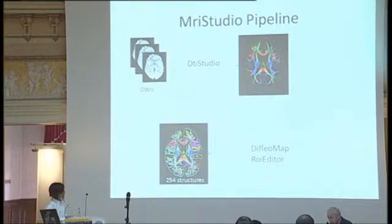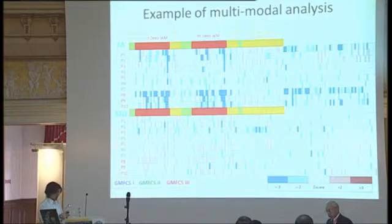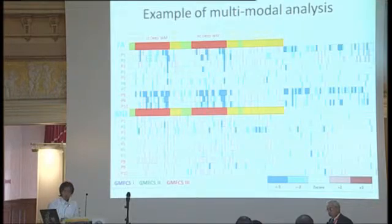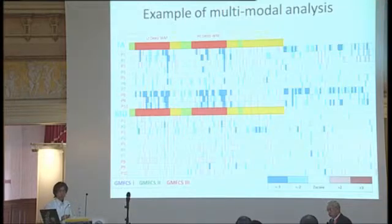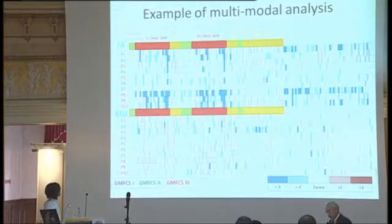Let me briefly explain this pipeline, which is similar to what Guido presented. This is an example using our cerebral palsy patient population. We have 10 patients — all with spastic type cerebral palsy. Red indicates more severe motor function disability and purple indicates the least severe.